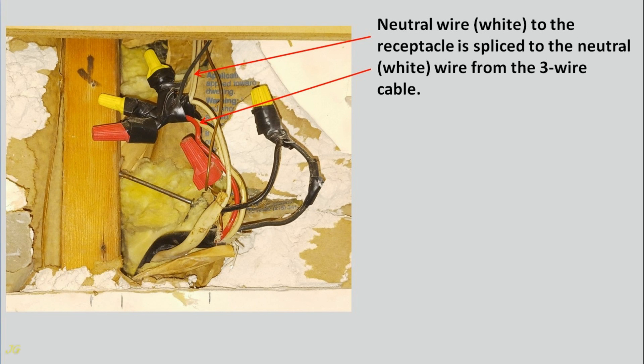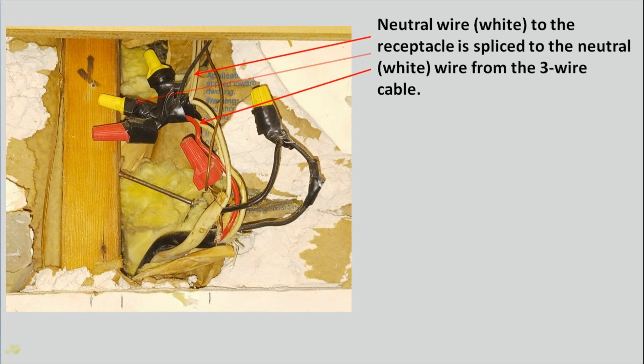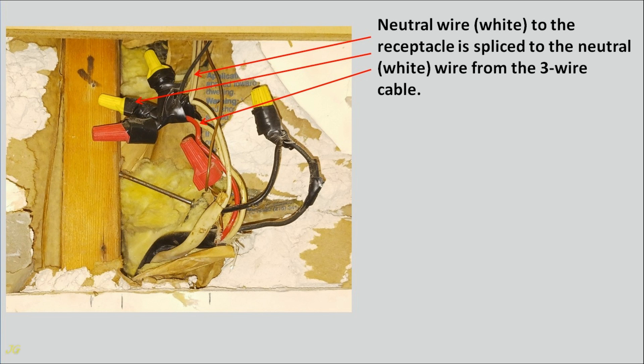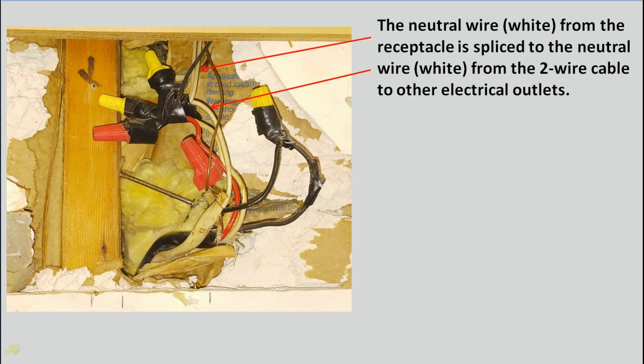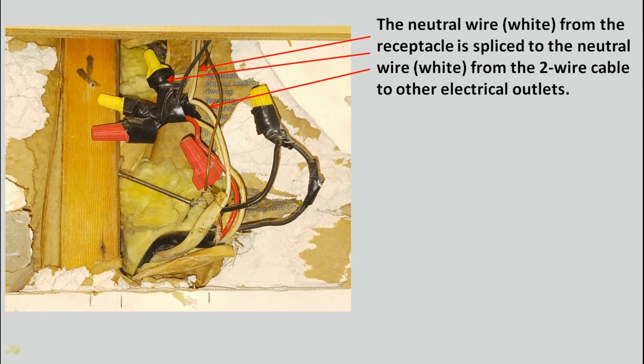Neutral wire white to the receptacle is spliced to the neutral white wire from the three-wire cable. The neutral wire white from the three-wire cable is spliced to the neutral wire white from the two-wire cable to other electrical outlets.